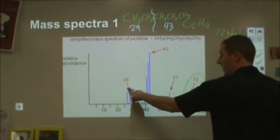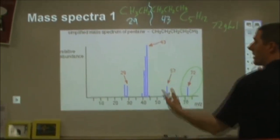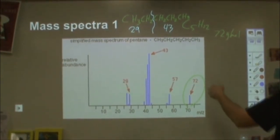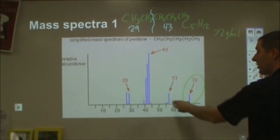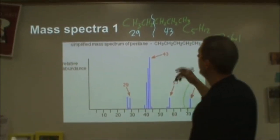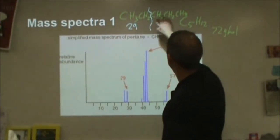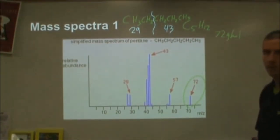Well, lo and behold, here's a peak at 29, and here's a big giant peak at 43. So we can see that this 43 peak in particular is occurring quite frequently. There's also one at 57, and that will actually occur if you add this CH2 group to the 43 peak.